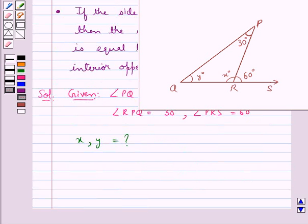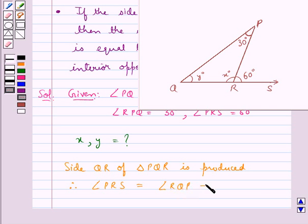Now, as you can see, the side QR of triangle PQR is produced. Therefore, the exterior angle so formed, that is angle PRS, is equal to the sum of the interior opposite angles, that is angle RQP plus angle QPR.